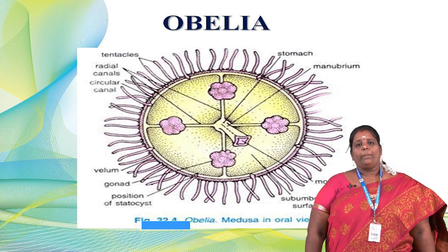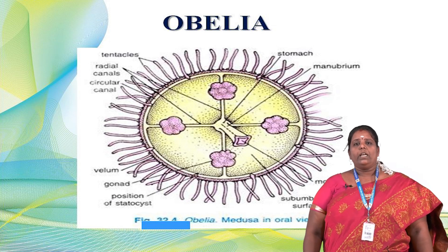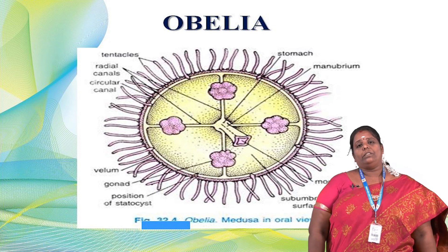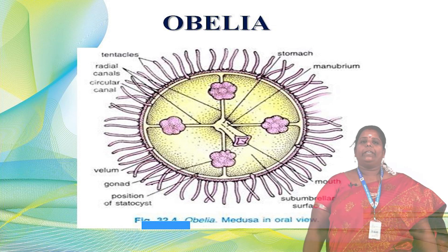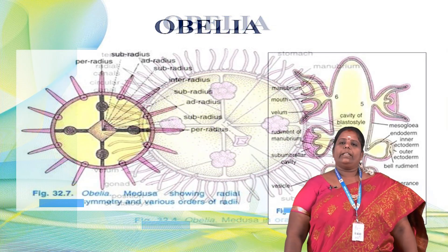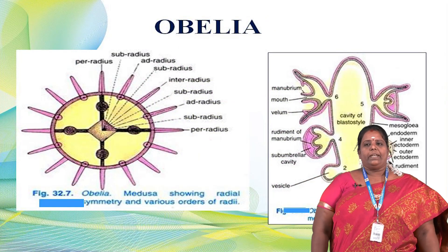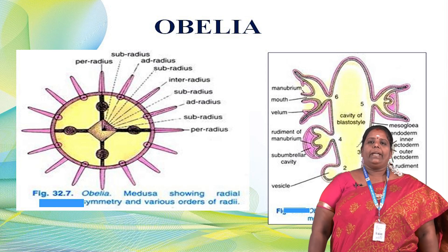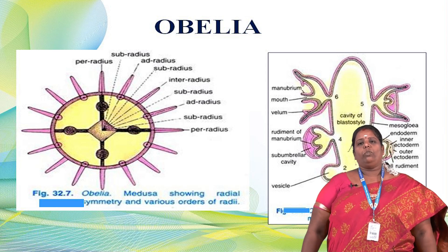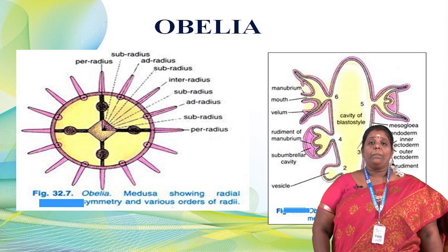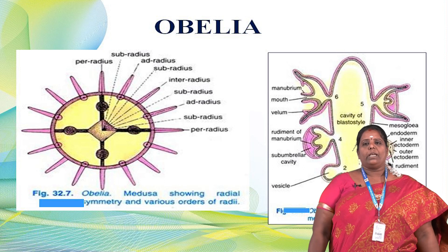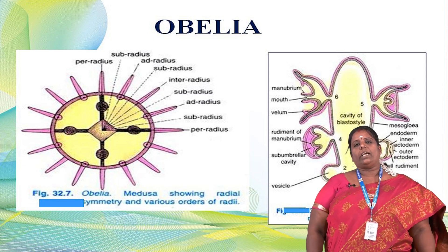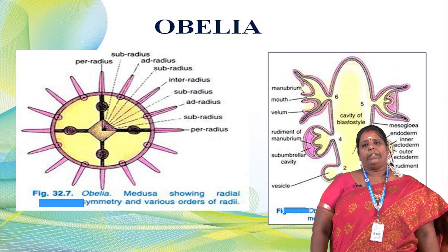The polyp produces the medusa, and the medusa produces the sexual zooids. Medusa is the singular form; medusae is the plural. The medusae show radial symmetry — they can be divided into four equal portions. These are part of the same Obelia colony, including a radius and sub-radius region. The colonial structure has tentacles present throughout, and the development of the Obelia medusa and blastostyle gives rise to vesicles.